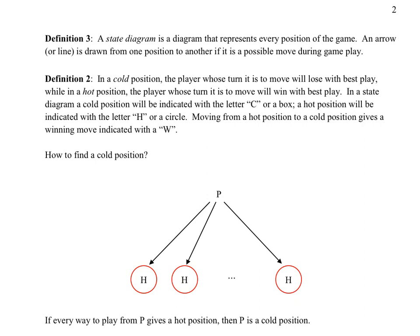In a hot position, the player whose turn it is to move will win with best play — you have a winning strategy. In a state diagram, a cold position will be indicated with a letter C or a box.